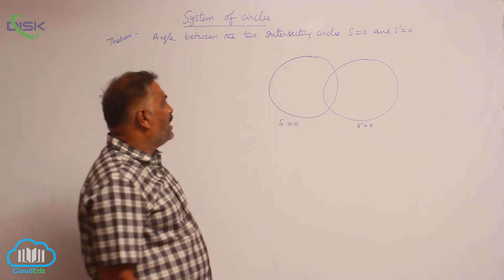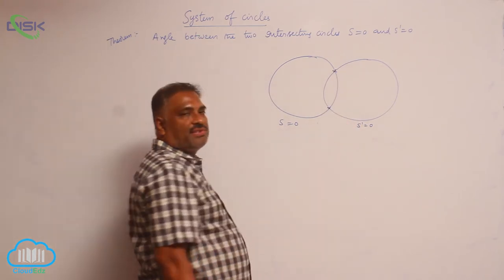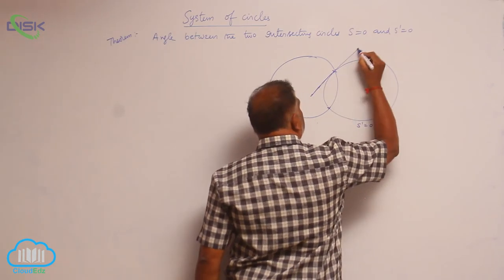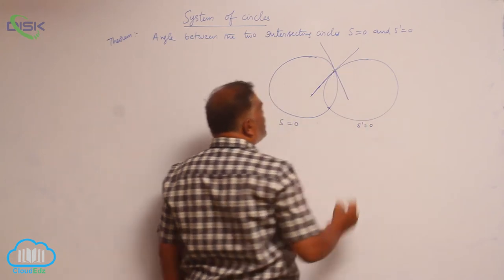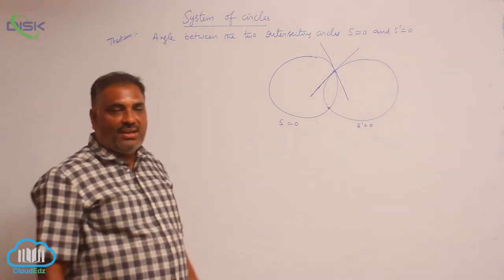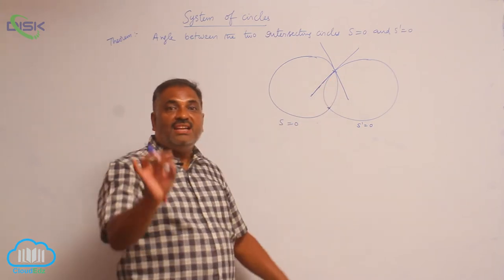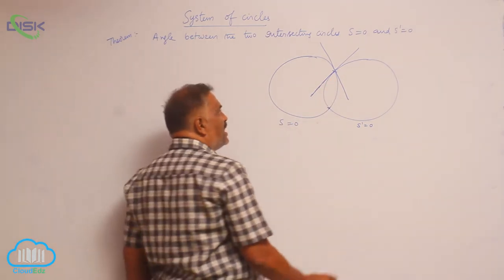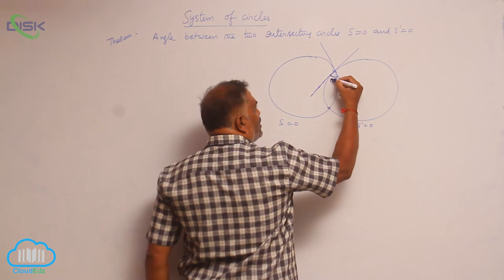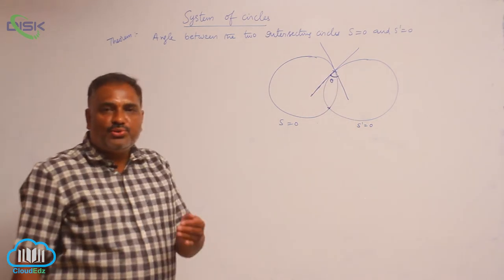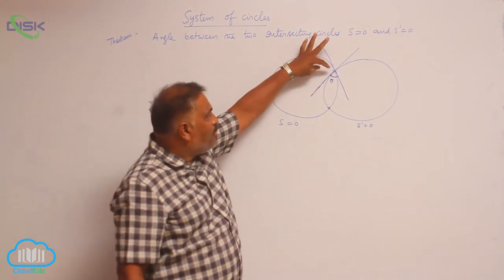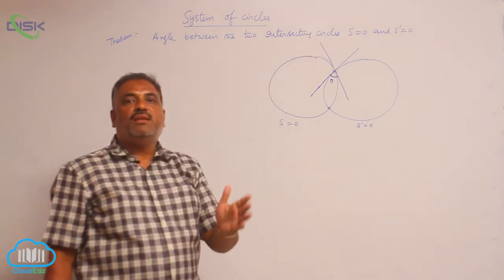When two circles are intersecting, at most they intersect in two points. At either point, you draw the tangents to both the circles. The angle between the two intersecting circles is defined as the angle between the tangents drawn at either point of intersection. You can draw the tangents either at one point or the other, and the angle between these two tangents is given by theta.